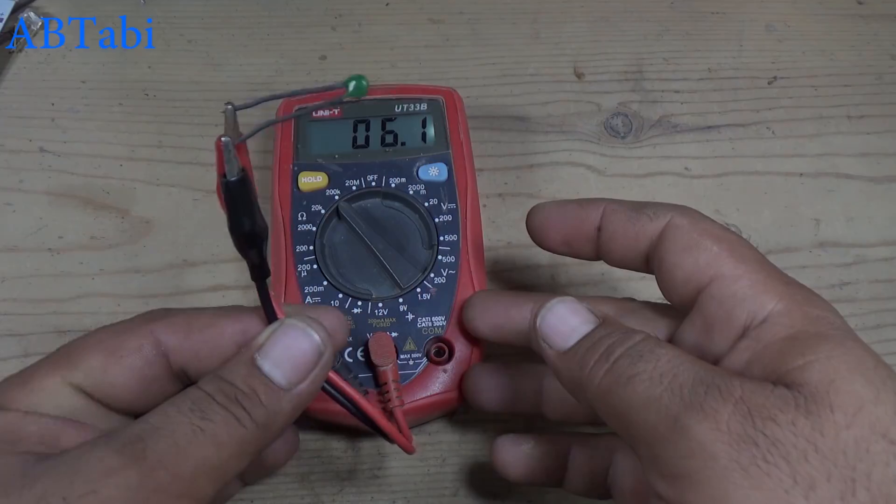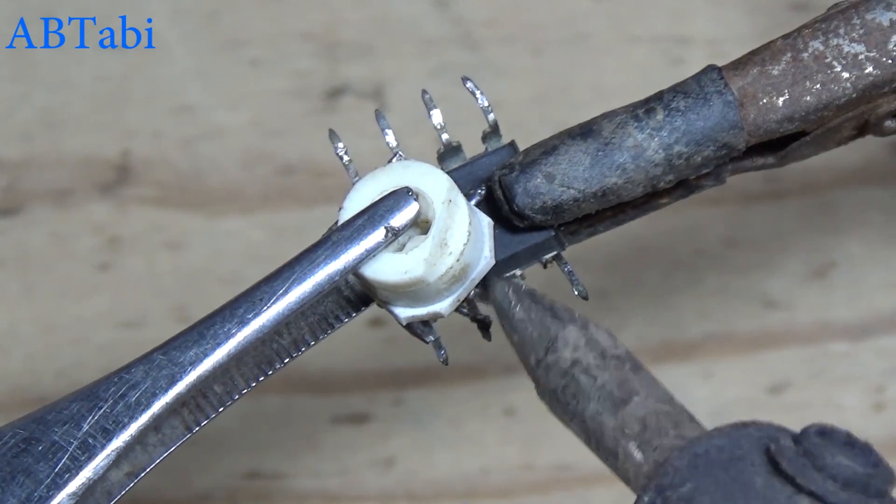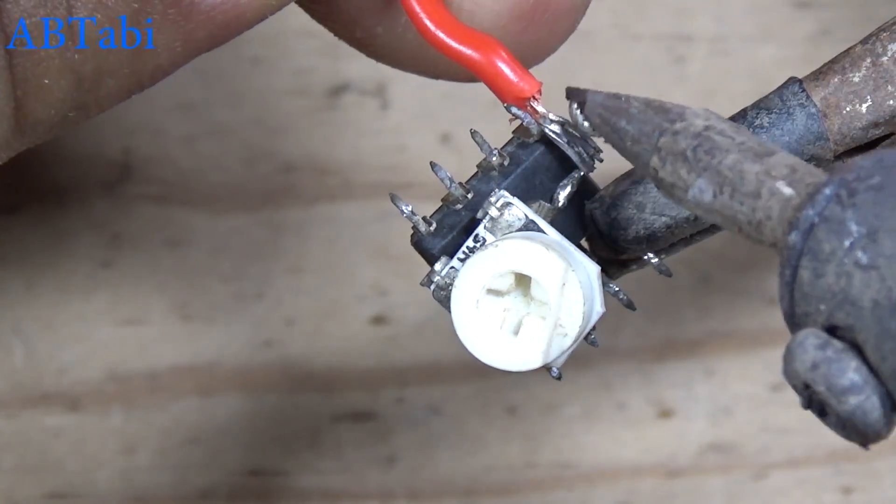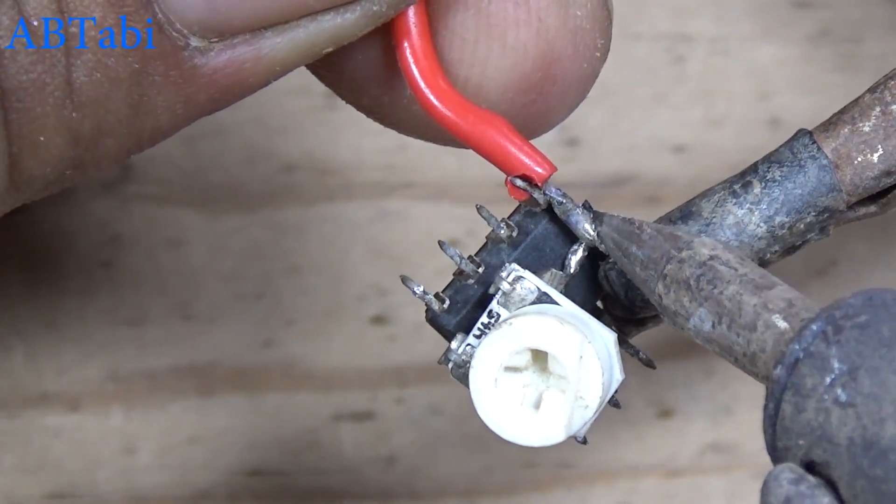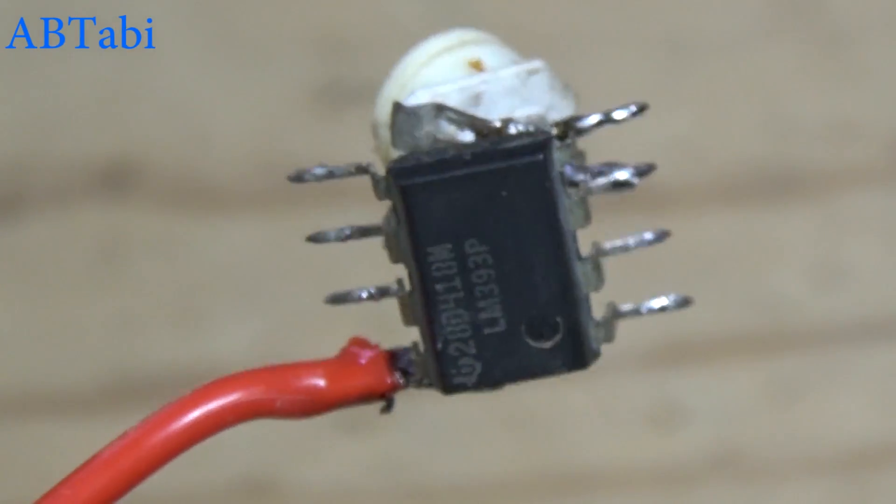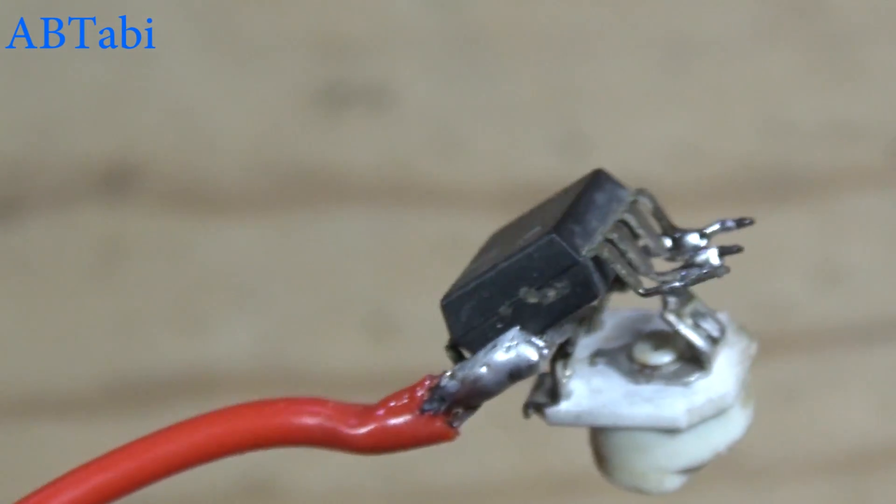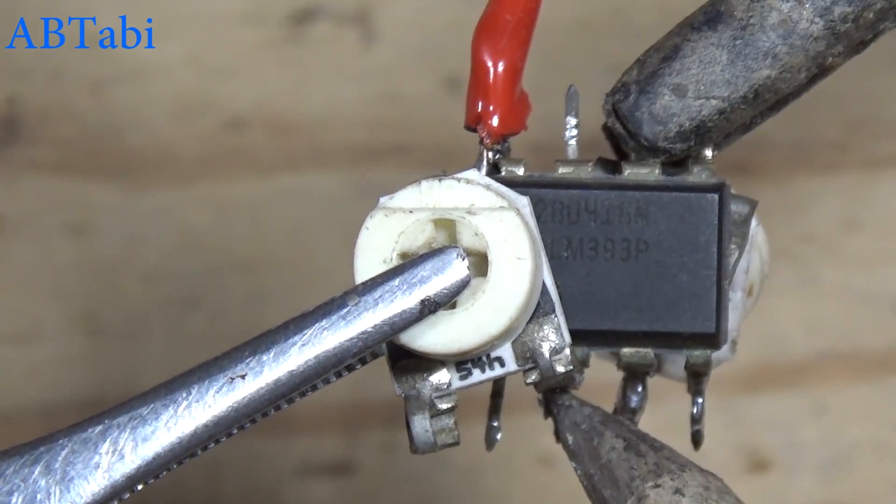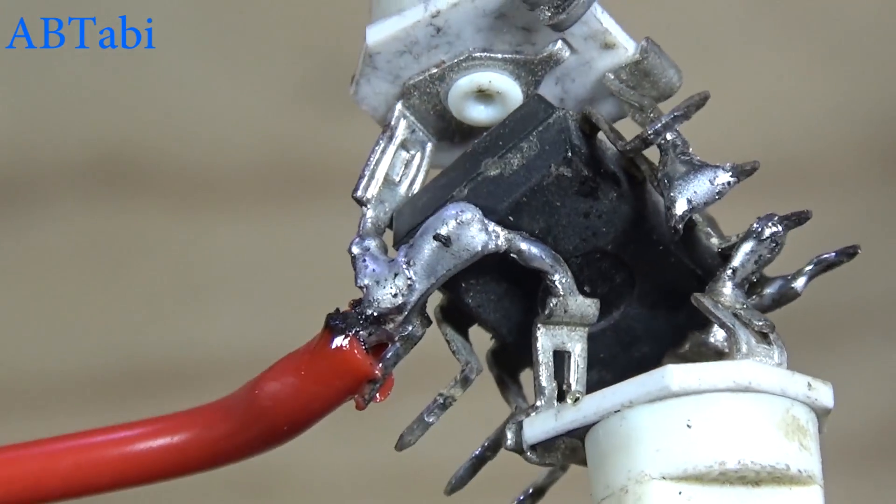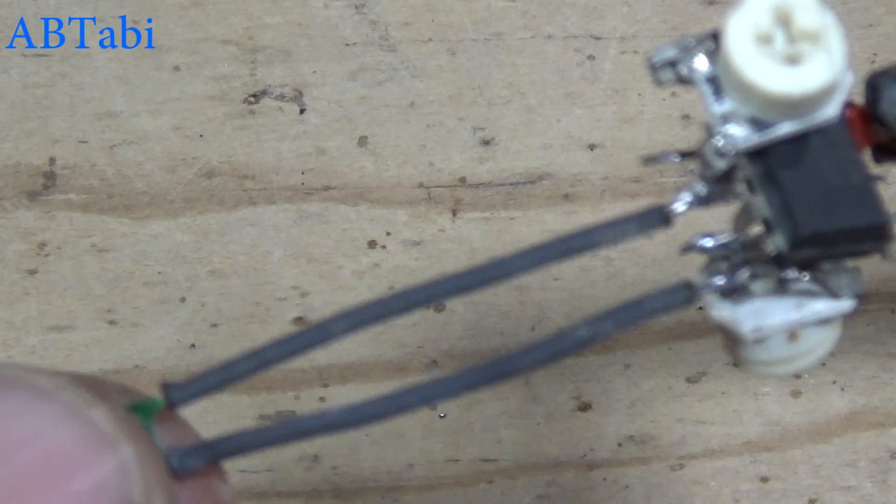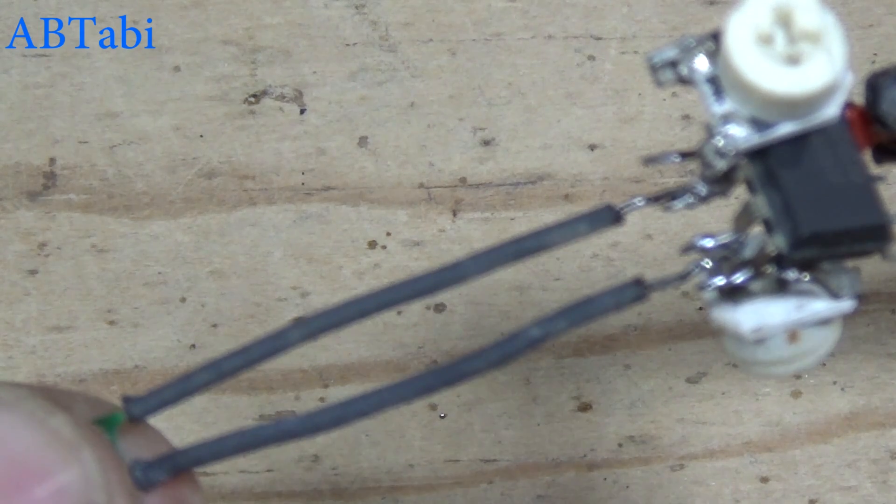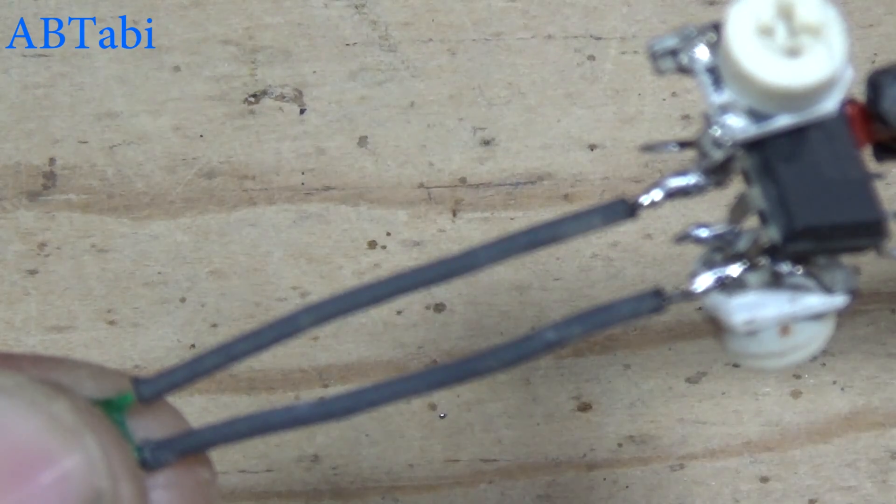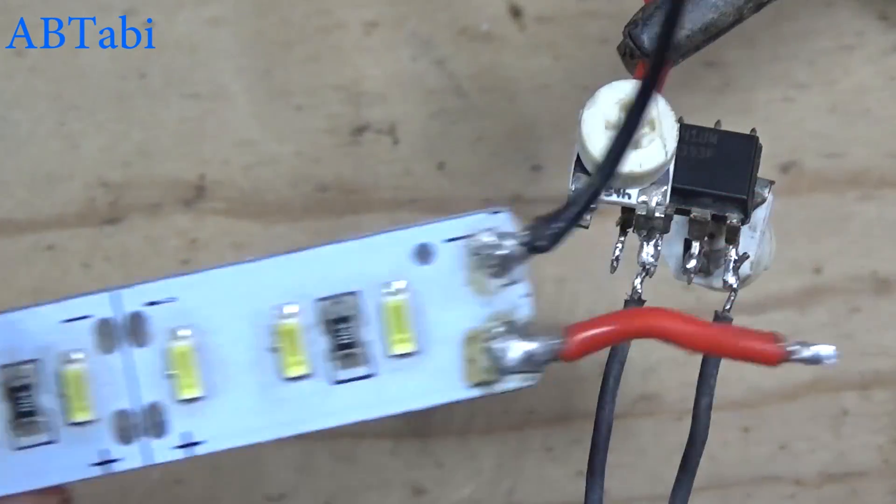50K variable resistor connects with IC pin 3, 4, and 8. Other 50K variable resistor connects with IC pin 2 and 8. Thermistor resistor connects with IC pin 2 and 4. We get output from IC pin 1.